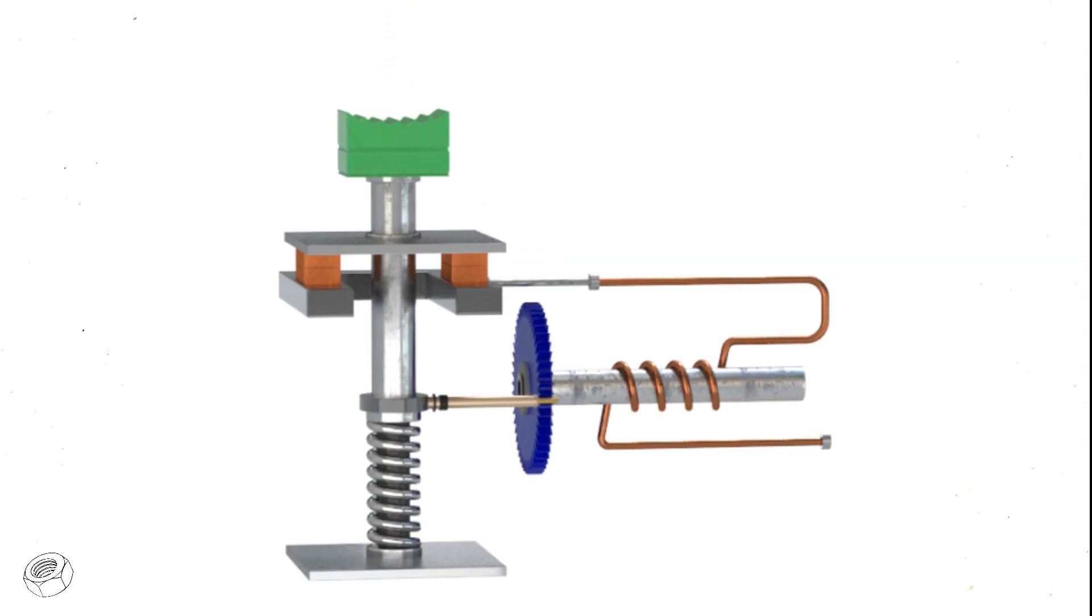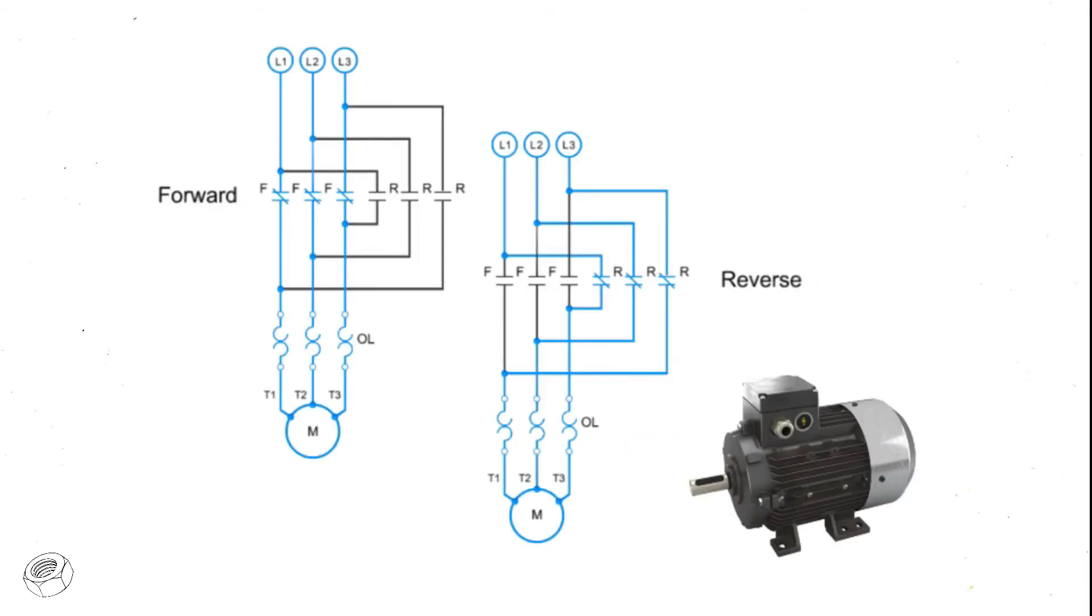Another important part of motor electronics is forward and reverse circuitry. Here is an example of the circuitry for a forward and reverse three-phase motor.